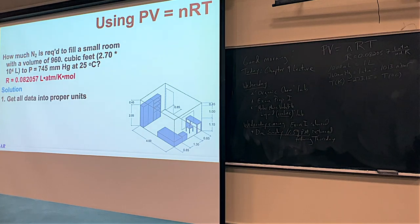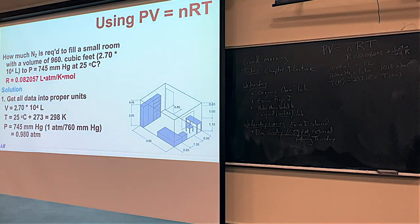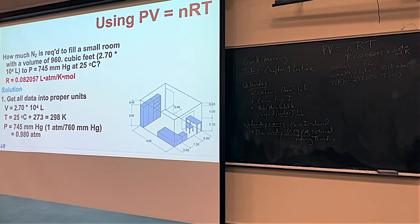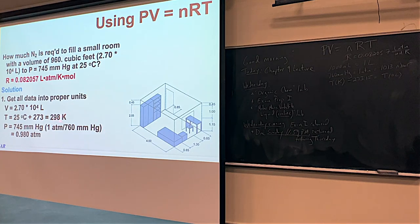The first part of these problems is to make sure everything's in the right unit. The liters are good to go. But temperature always has to be in Kelvin. So 25 plus 273 — to the first doubtful digit — would be 298 Kelvin. And we also have to turn the pressure into atmospheres.